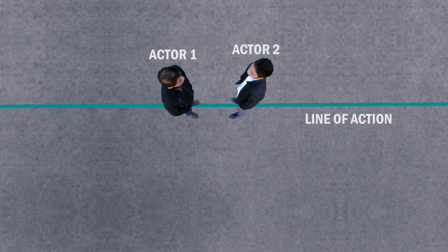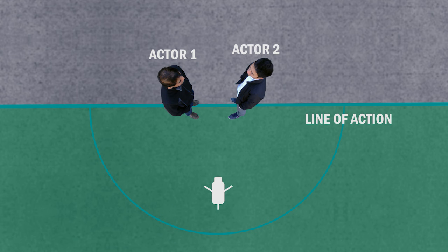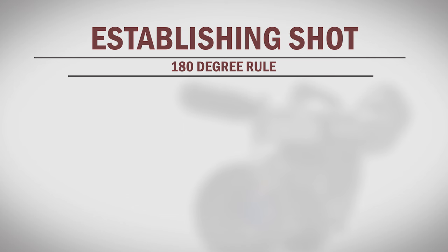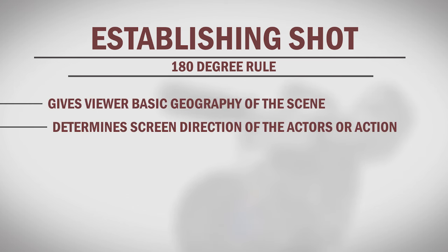The 180 Degree Rule states that once you place your camera on one side of the line, you should keep all your shots within the 180 Degree Arc on the same side of the line in order to maintain proper screen direction. When you first introduce a scene, you'll typically have an establishing shot to help orient your viewers. The establishing shot gives the viewer the basic geography of the scene and determines the screen direction of the actors or action.